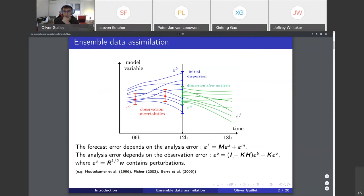Of interest is the second formula here, where you see that epsilon zero, which stands for the observation error vector, contributes to the final error analysis epsilon a.